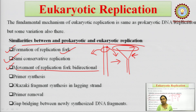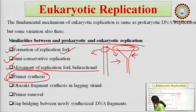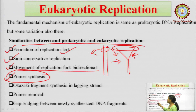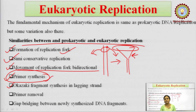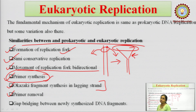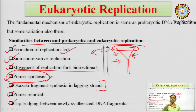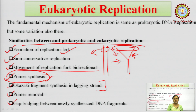Fourth, for the replication process to begin, there is a need for a primer in both cases — primer synthesis is required. You cannot skip this process. Next is Okazaki fragment synthesis, which as we saw in the previous lecture, these Okazaki fragments are found in the lagging strand, and this is common to both. Additionally, in both cases the primer needs to be removed, and the gap between synthesized DNA molecules must be filled with nucleotides.